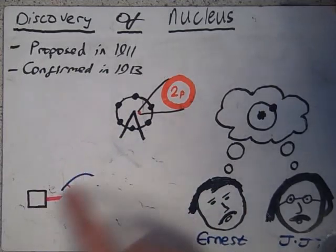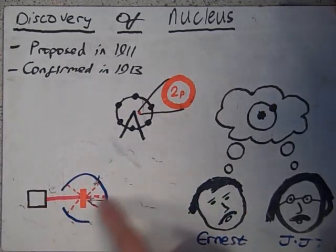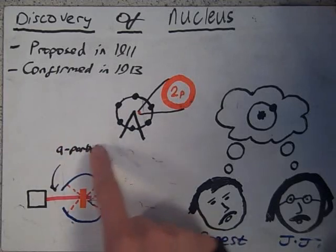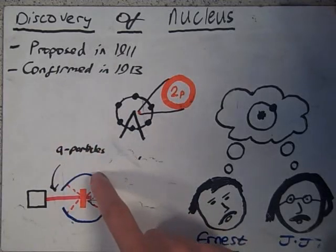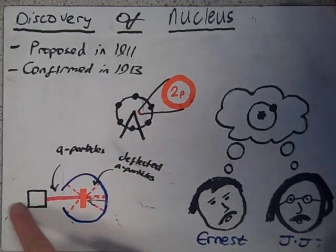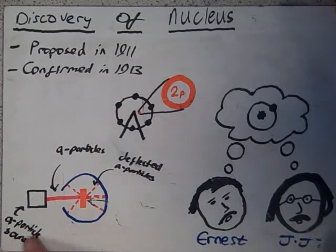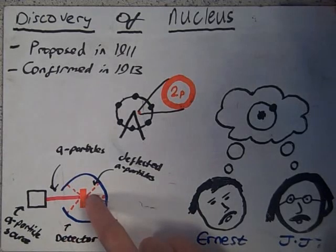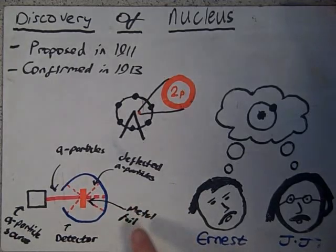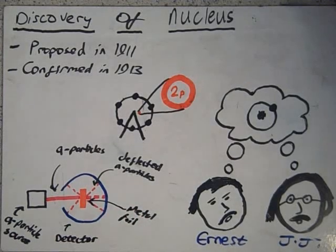From this experiment he was able to draw three conclusions. First, most of the atom's mass was concentrated in a small region at the centre of the atom, which he called the nucleus. Second, this nucleus was positively charged because it repelled alpha particles, which are also positively charged. Lastly, the size of the nucleus compared to the atom was minuscule and is relative to the size of a 2p coin in the centre of the London Eye.